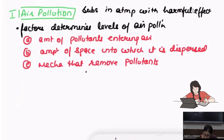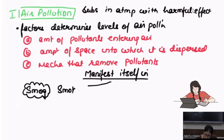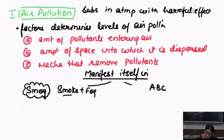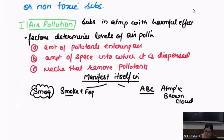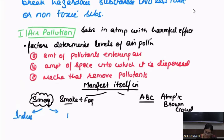Increasing levels of air pollution manifest in two forms that we have encountered questions on. One is smog, very commonly referred to as smoke plus fog. Two is ABC, that is Atmospheric Brown Cloud. When I take the reference of smog, it can have two variants: one is called industrial smog and two is called photochemical smog.